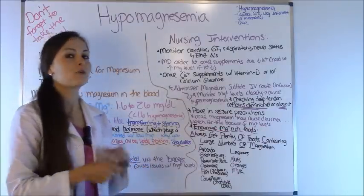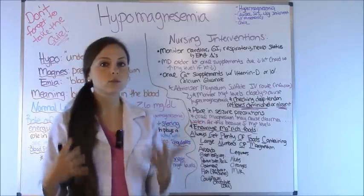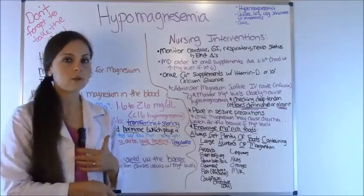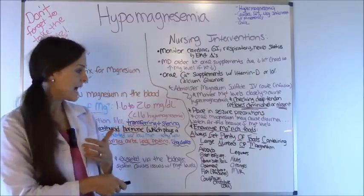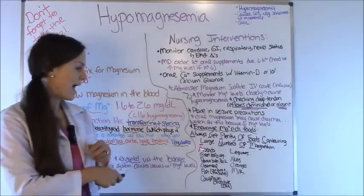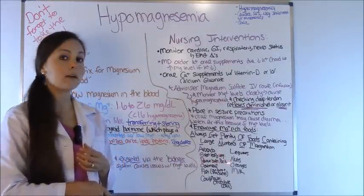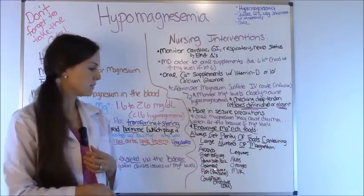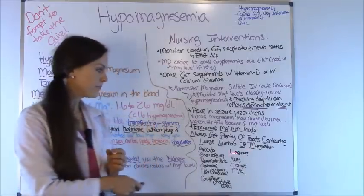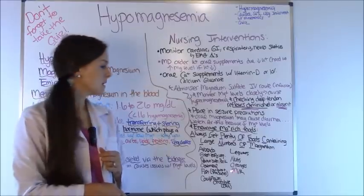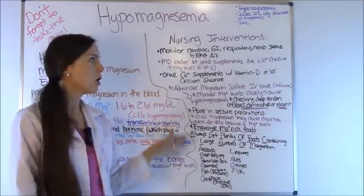Exams love to ask what foods you'll feed a patient with low magnesium. Make sure you know foods rich in magnesium. Remember the phrase: always get plenty of foods containing large numbers of magnesium. A for avocado, G for green leafy vegetables like spinach and kale, P for peanut butter and pork, O for oatmeal and fish — specifically canned tuna and mackerel, C for cauliflower and chocolate — specifically dark chocolate, L for legumes, N for nuts, O for oranges, and M for milk. Those are foods to encourage patients with low mag levels to consume.